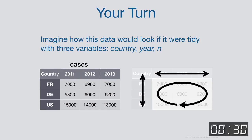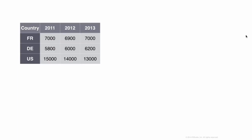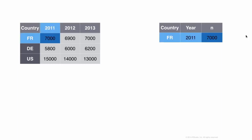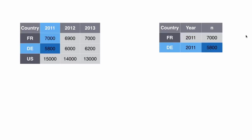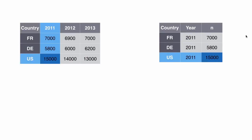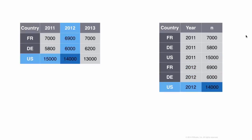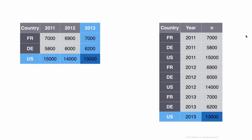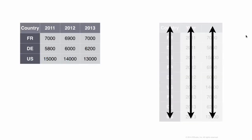This is what the data set would look like in a tidy format. We keep all the information and all the variables and values — we just restructure them so each variable appears in its own column. The columns we want are country, year, and n. We need combinations like France in 2011 with n equal to 7,000, Germany in 2011 with its own value, and so on — porting all the values from the original field of cells into the new data frame. This is the tidy version of the cases data frame.